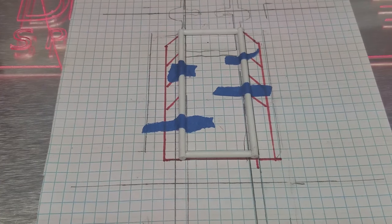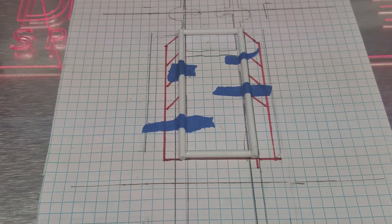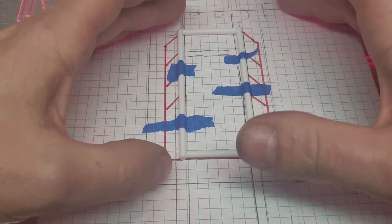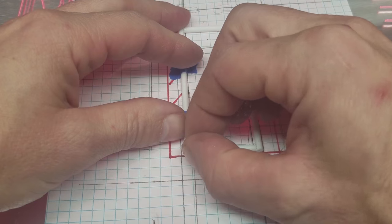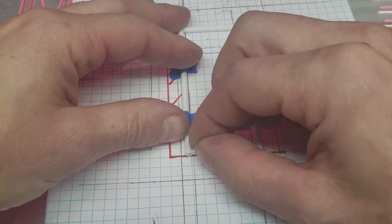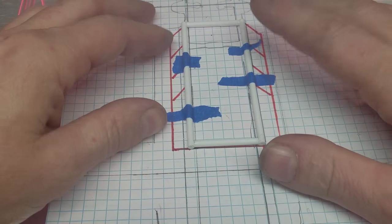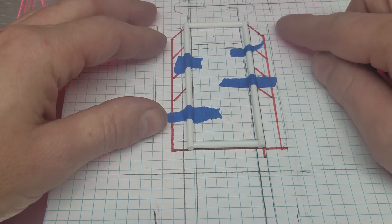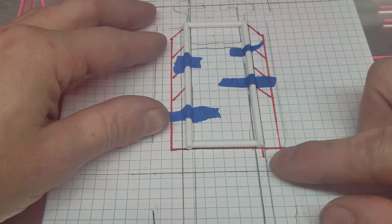All right guys we're back. So this is all dried. I re-taped it to the paper in its location. So now let's start building these side pieces.